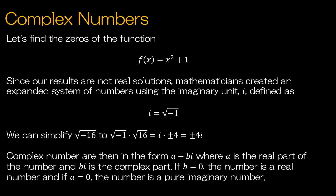Complex numbers. We'll begin with an illustration. If I wanted to find the zeros of the function f(x) = x² + 1, I would set the function equal to 0, subtract 1 from each side, and then take the square root. So I would get x equals plus or minus the square root of negative 1. The square root of negative 1 isn't a real number, so mathematicians created a whole expanded system of numbers using what they call the imaginary unit i.